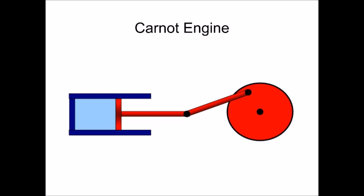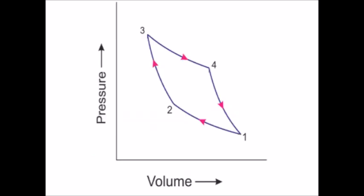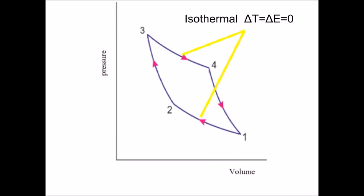The Carnot engine can expand or contract, and it can do this either adiabatically with a temperature change or isothermally adding or losing heat. You can see this on a pressure-volume graph. Two of the processes are isothermal, two are adiabatic.